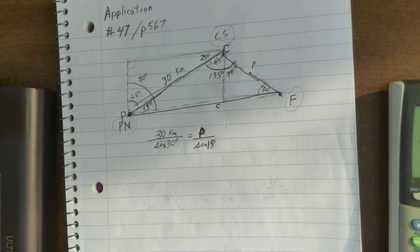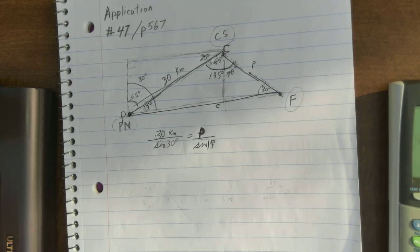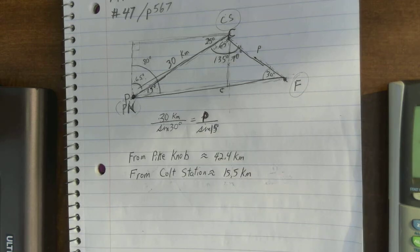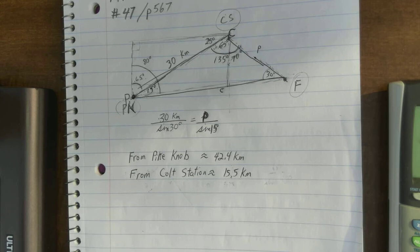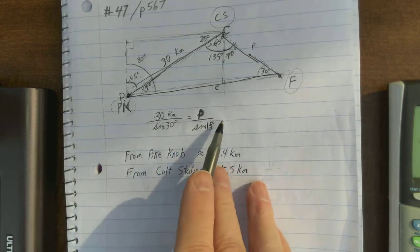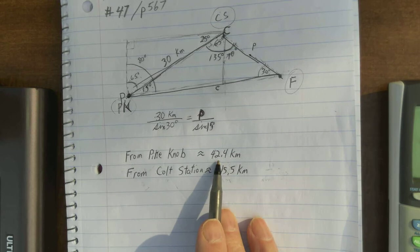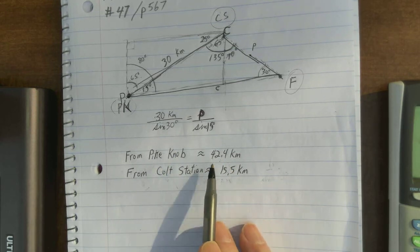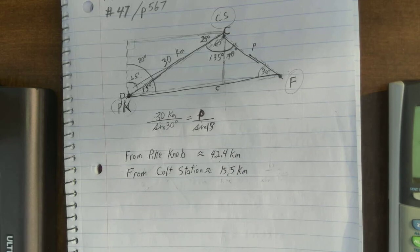Work that through, and c, and you do the two setups, what you get. Okay. If you work that out, and you got both of them set up, and you should be getting, Pine Knob to the fire is about 42.4 kilometers, and Colt Station to the fire is about 15.5 kilometers.